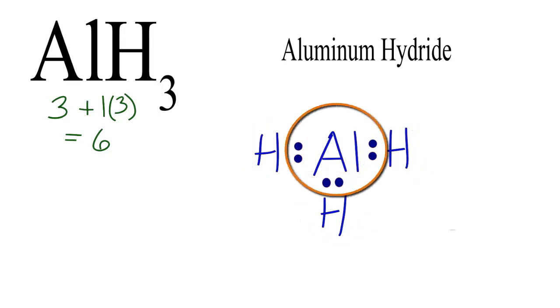The aluminum only has six, but aluminum is also an exception. It only needs six valence electrons for that outer shell, that highest energy level, to be full.